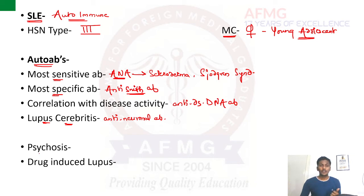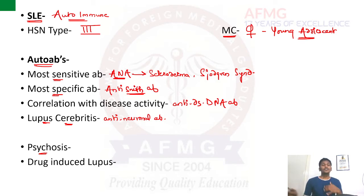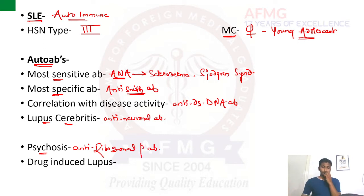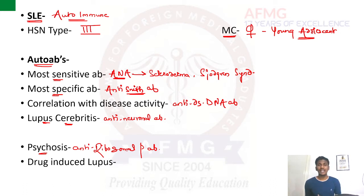Psychosis can also be seen in patients of SLE as a neuropsychiatric manifestation. This psychosis is due to anti-ribosomal P-antibody. Anti-ribosomal P-antibody indicates psychosis, whereas anti-ribonucleoprotein antibody is positive in cases of mixed connective tissue disorder.